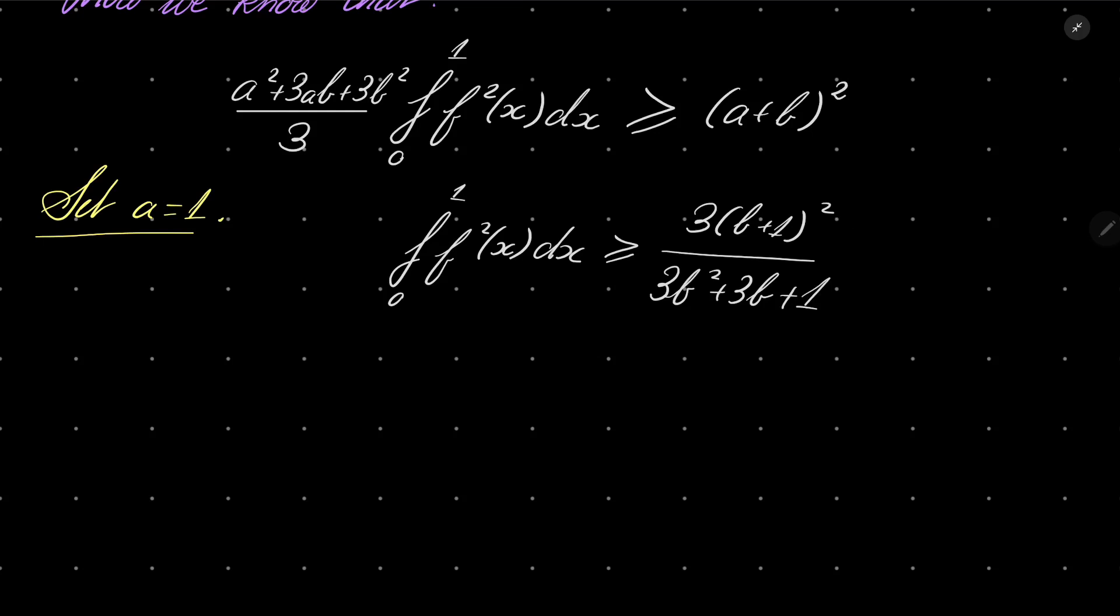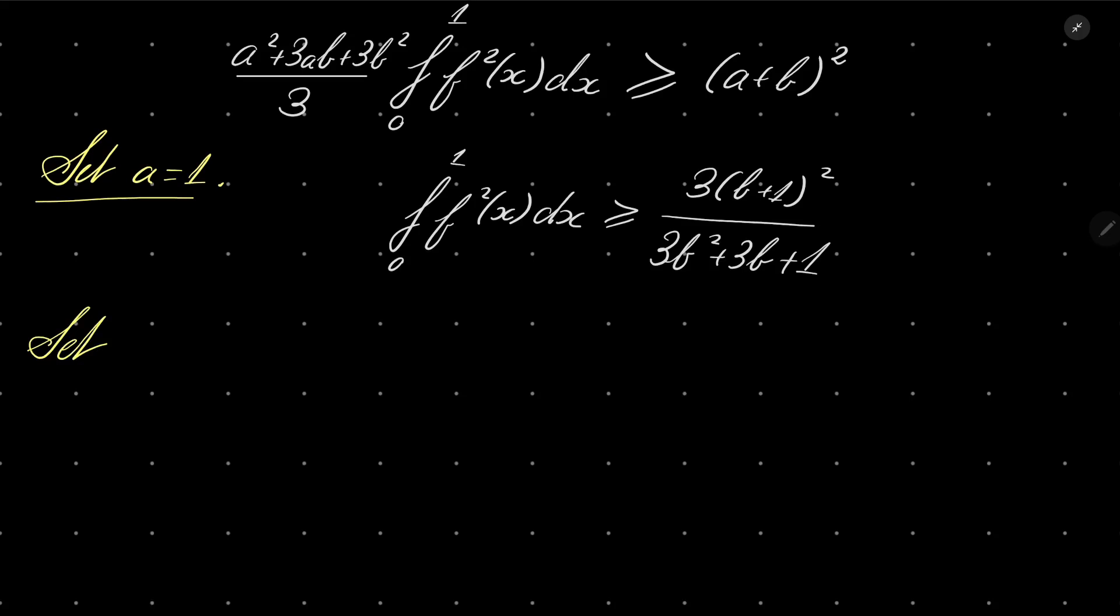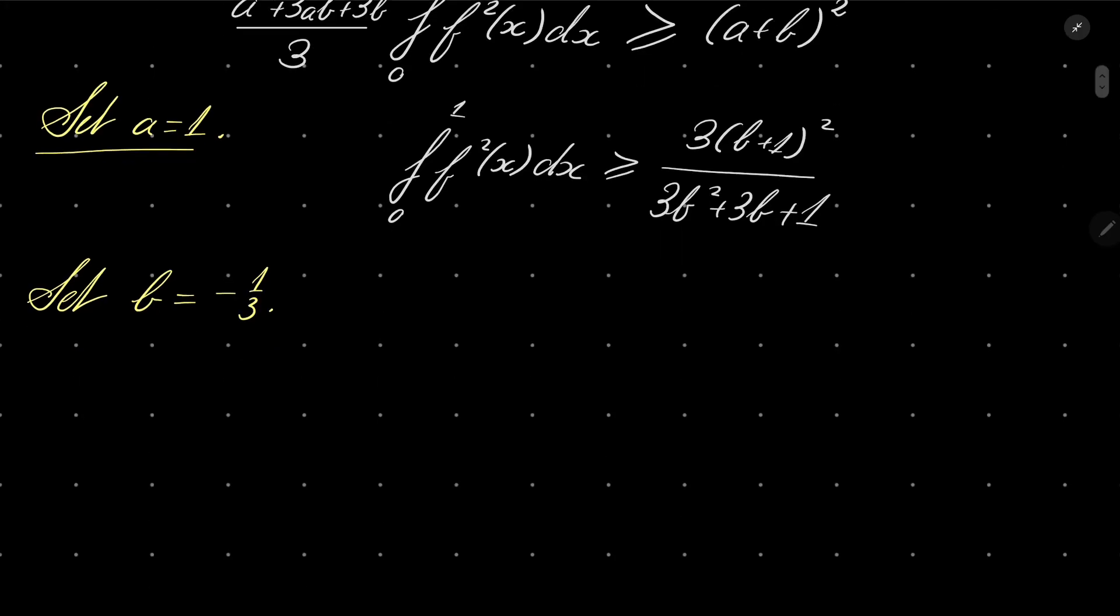Now, we should get 4 here. Is it possible? It is. You can either solve a quadratic equation or just guess the correct value. The correct value of b is minus 1 third. Let's verify: 3 times minus 1 third plus 1 squared equals 2 thirds squared, which is 4 over 9. In the denominator we have 3 times 1 over 9 minus 3 times 1 third plus 1, which equals 1 third. So we get 3 times 4 over 9 divided by 1 third, which equals 4 over 3 divided by 1 third, and it's just 4.